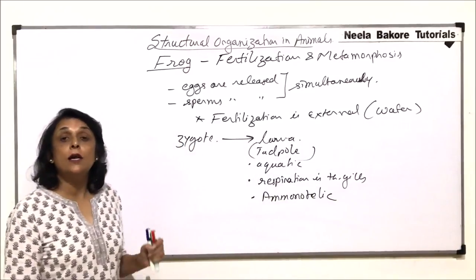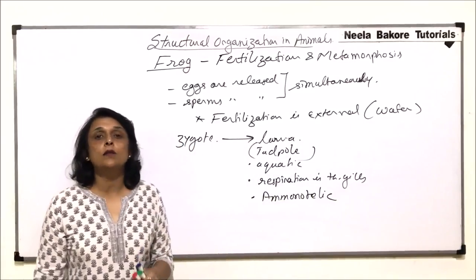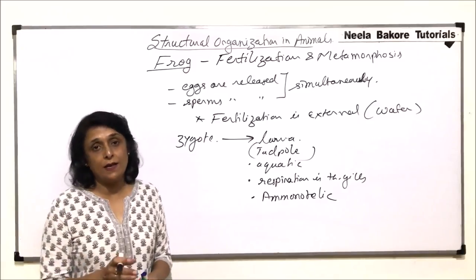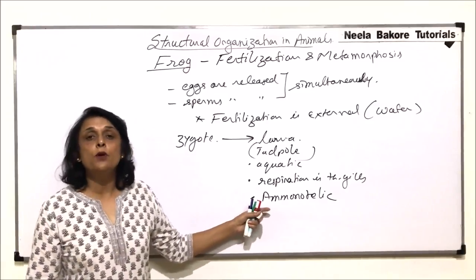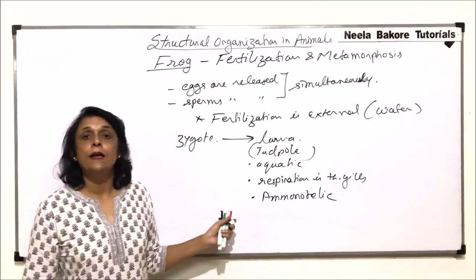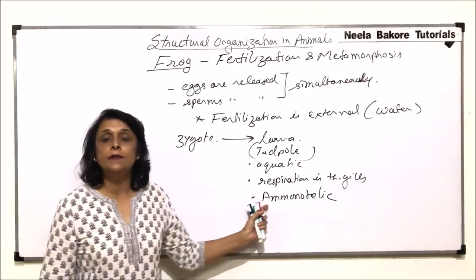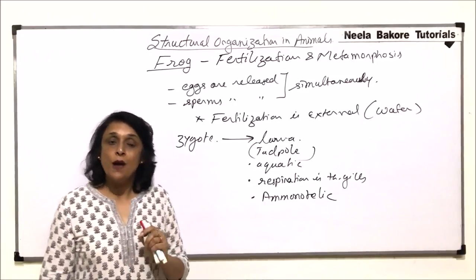Adult frogs are ureotelic because frogs live on land as well as in water. Whereas tadpoles are purely aquatic and that is why they are capable of eliminating the nitrogenous waste in the form of ammonia.